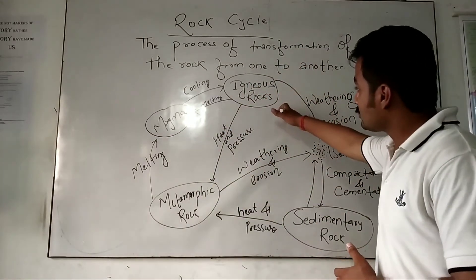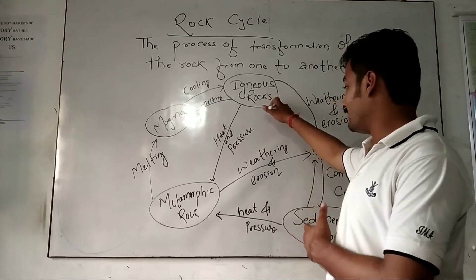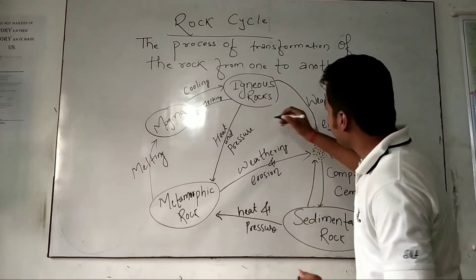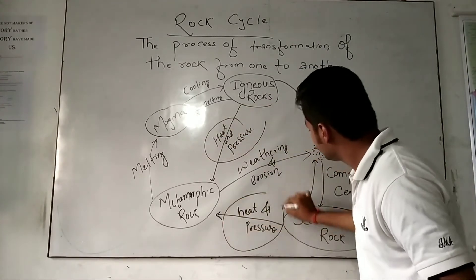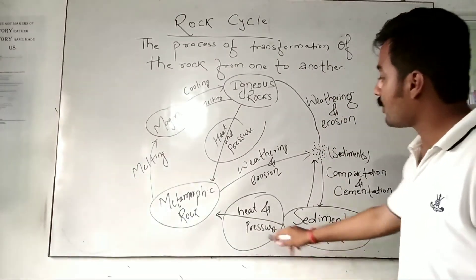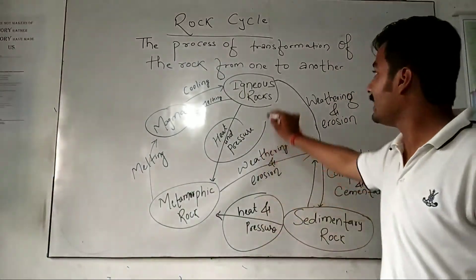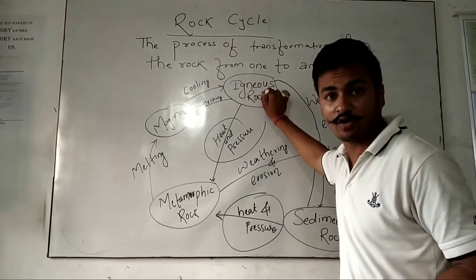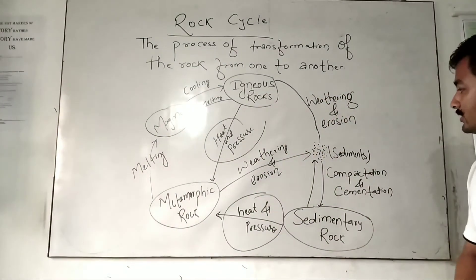If igneous rock gets extreme heat and pressure—heat and pressure is one of the most important things for the formation of metamorphic rock—from any of these two rocks, whether it is igneous rock or sedimentary rock.